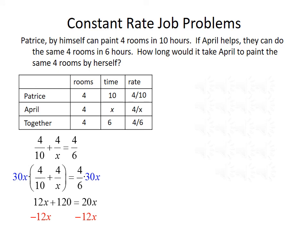We'll subtract 12X from both sides of the equation to get all of our X's on the same side, giving us 120 equals 8X. Then we'll divide both sides by 8, giving us that X equals 15 hours. So it takes April 15 hours to paint the four rooms by herself.